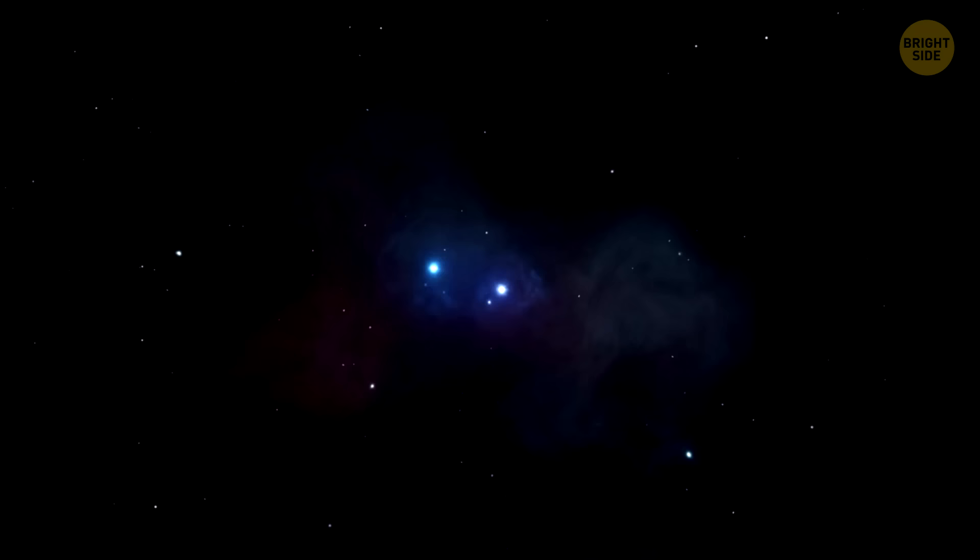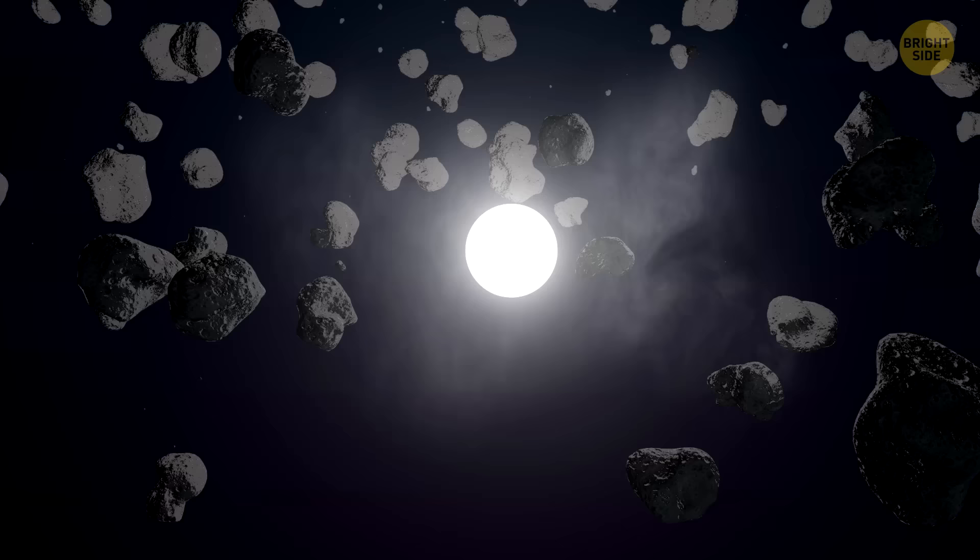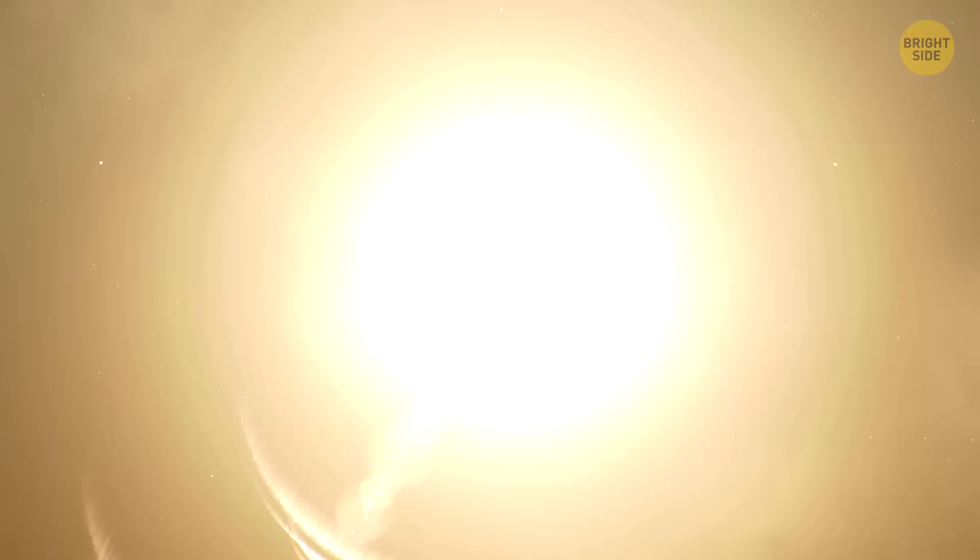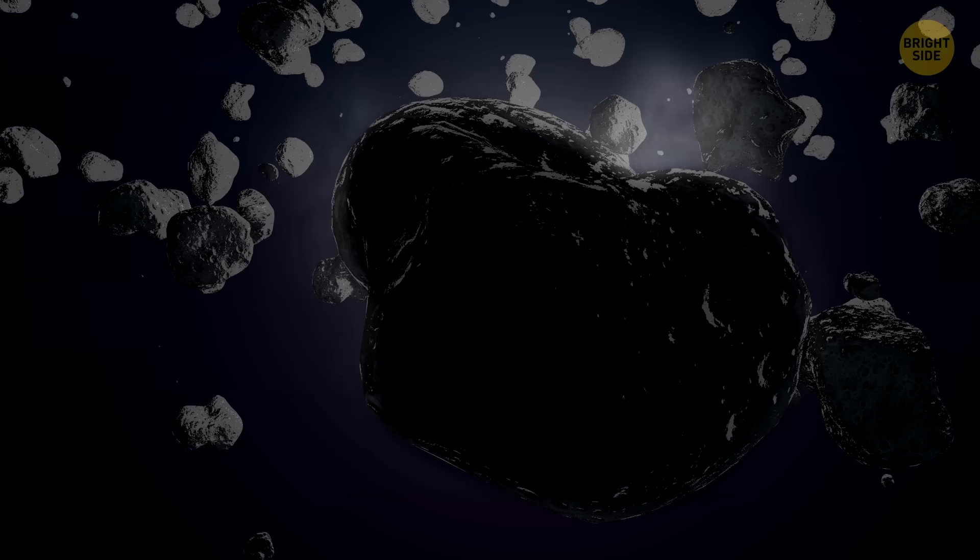In 100 trillion years, the Degenerate Era will begin. With no fuel to feed the new stars, they will simply stop forming at all, even if some tried it first. At the same time, the existing stars will slowly fade, turning from bright objects into dwarfs.